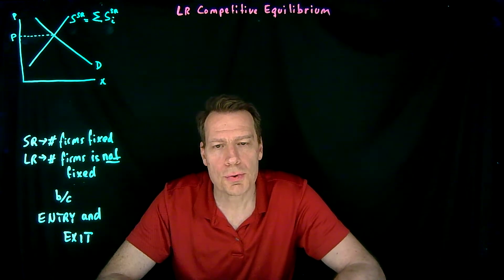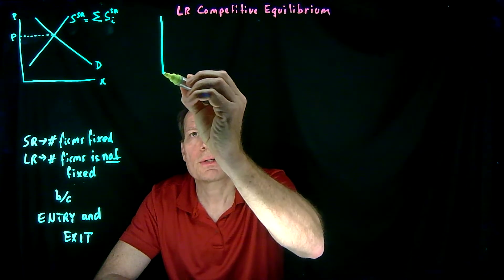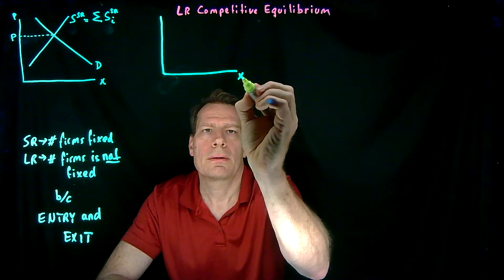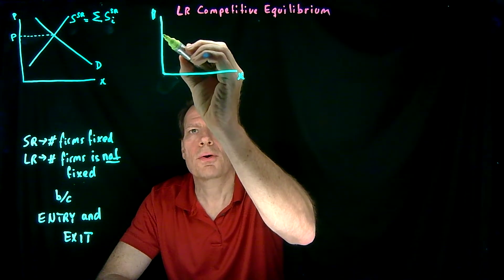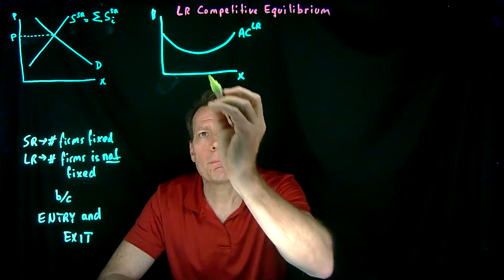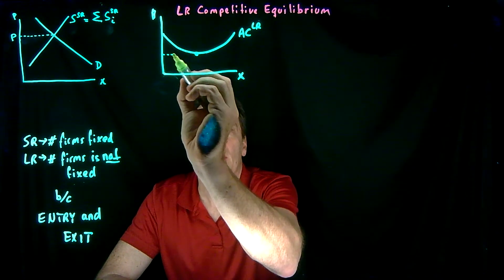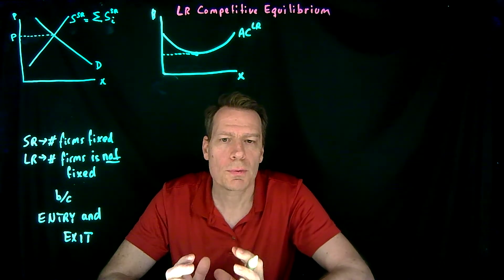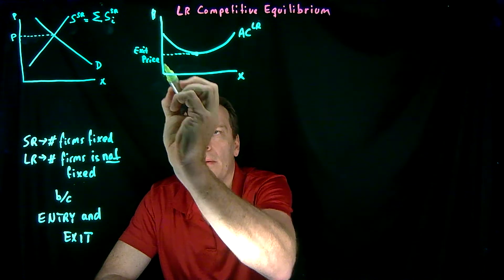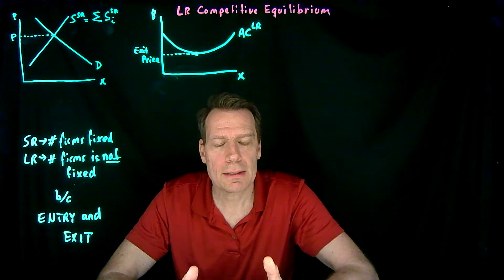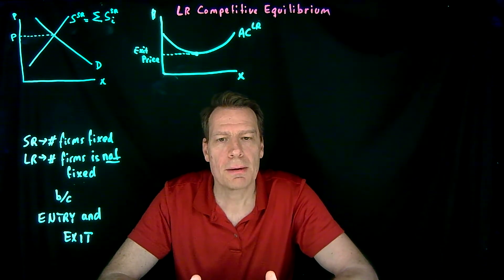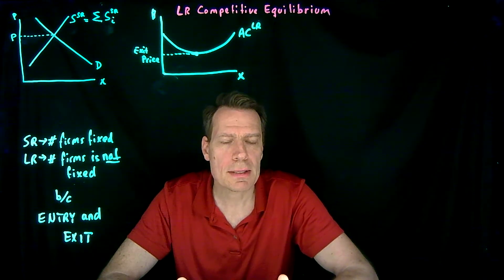Let's think about how entry and exit relate to the short-run equilibrium. In the next graph, I'm going to graph a long-run average cost curve for one of the firms in the industry. At the bottom of that long-run average cost curve, the zero-profit long-run price occurs — what we've also called the exit price. If price drops below that, firms don't want to remain because they'd make negative long-run profit. If price is above it, firms do want to remain because they're making positive long-run profit.